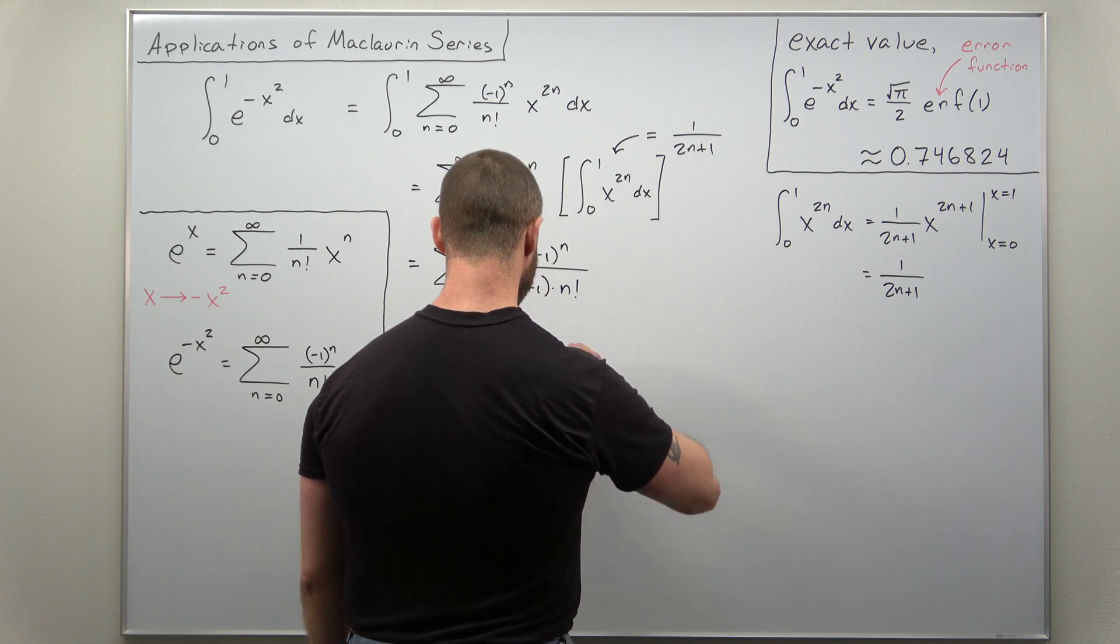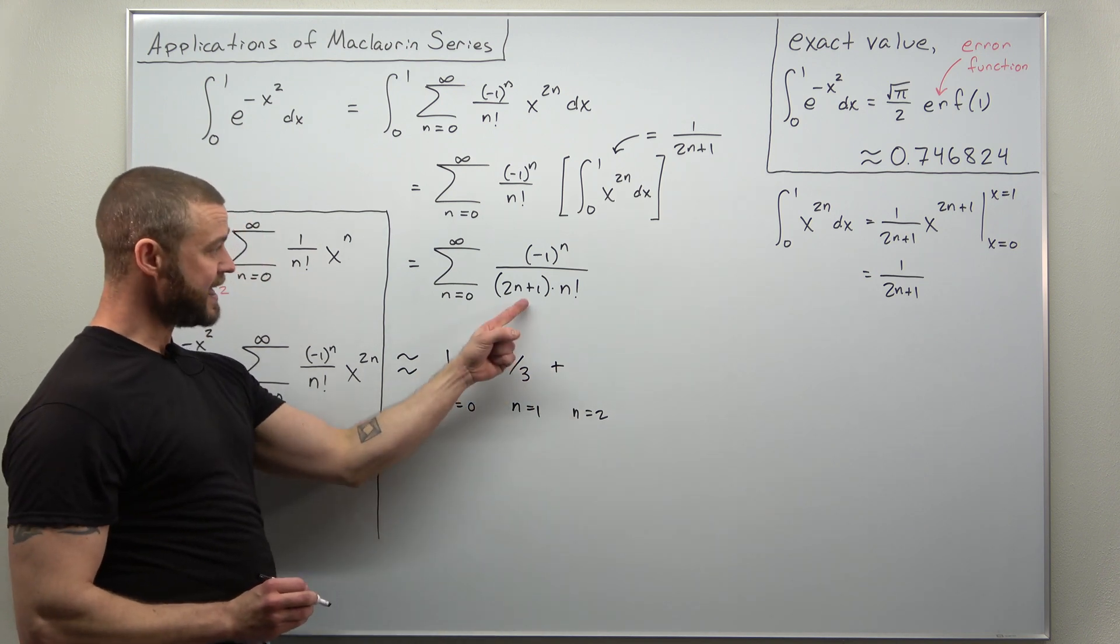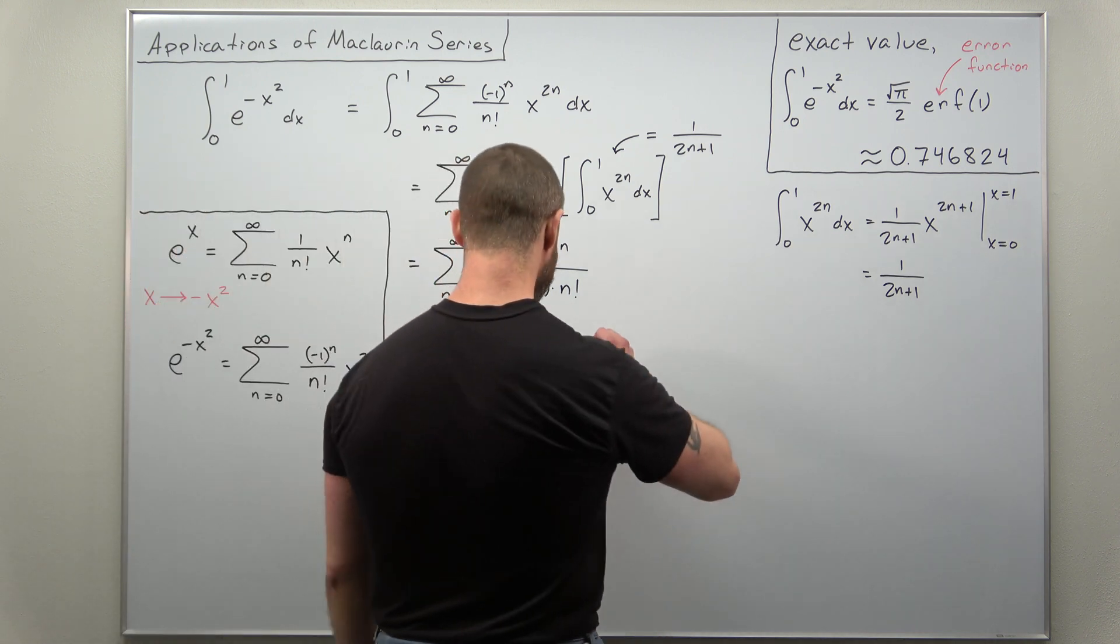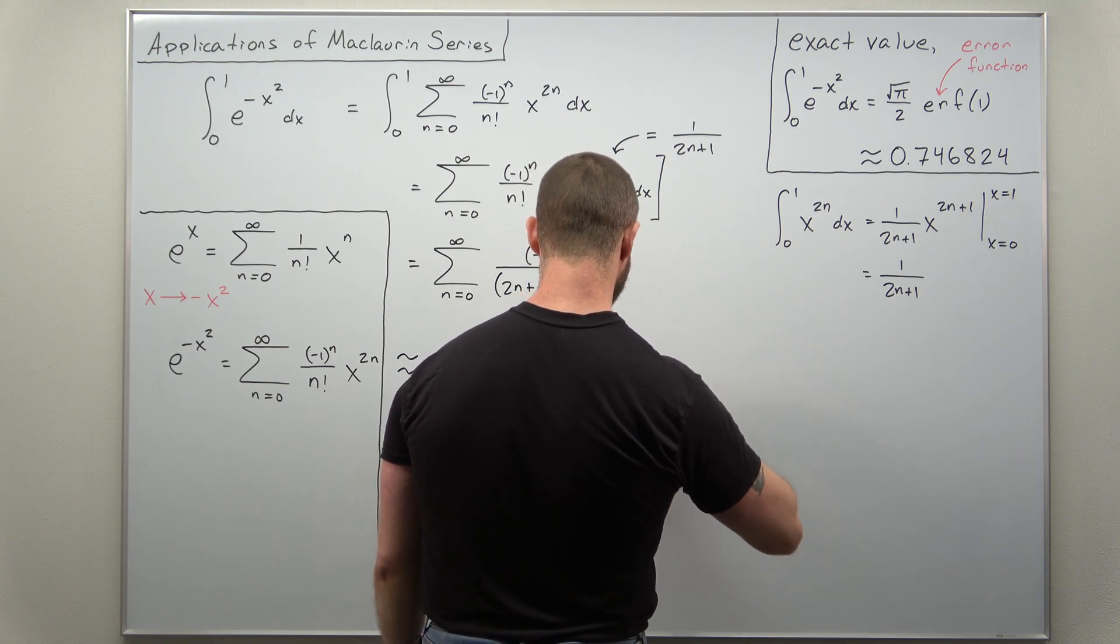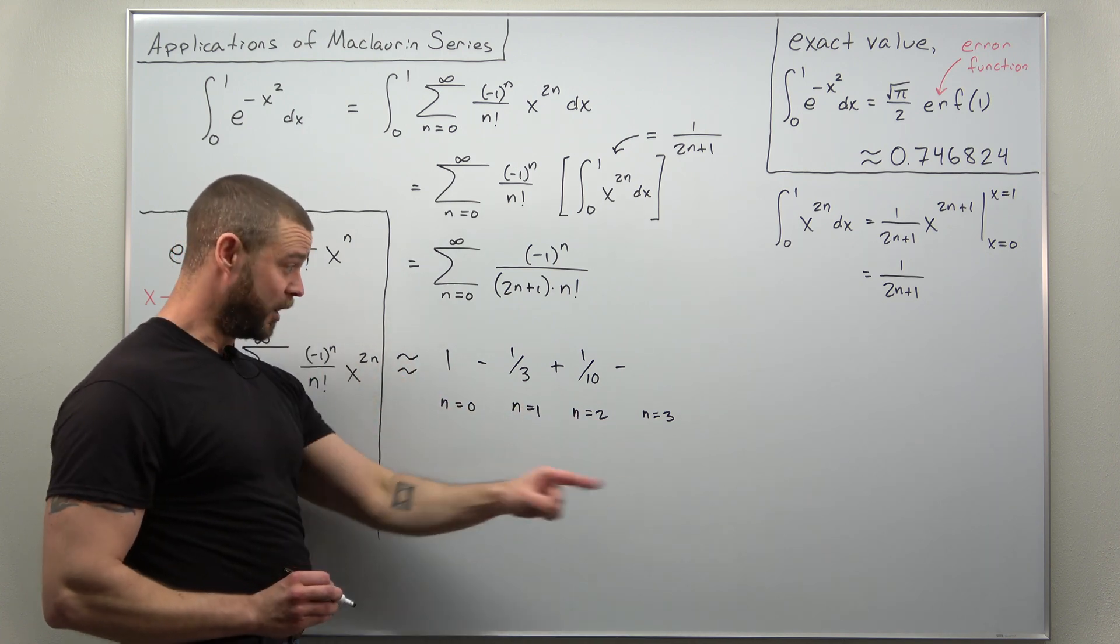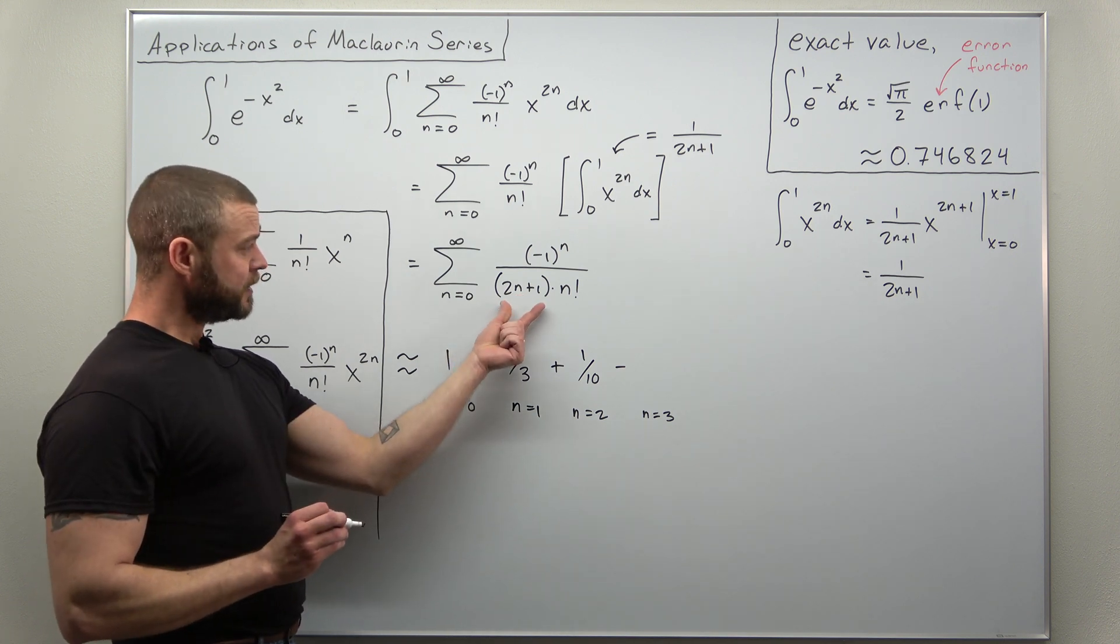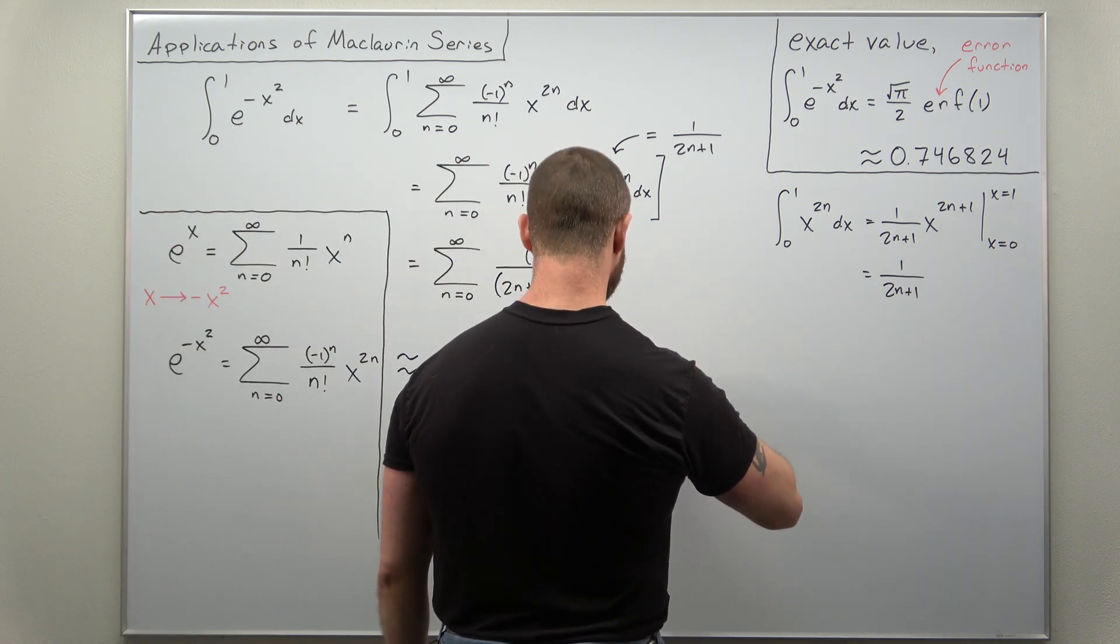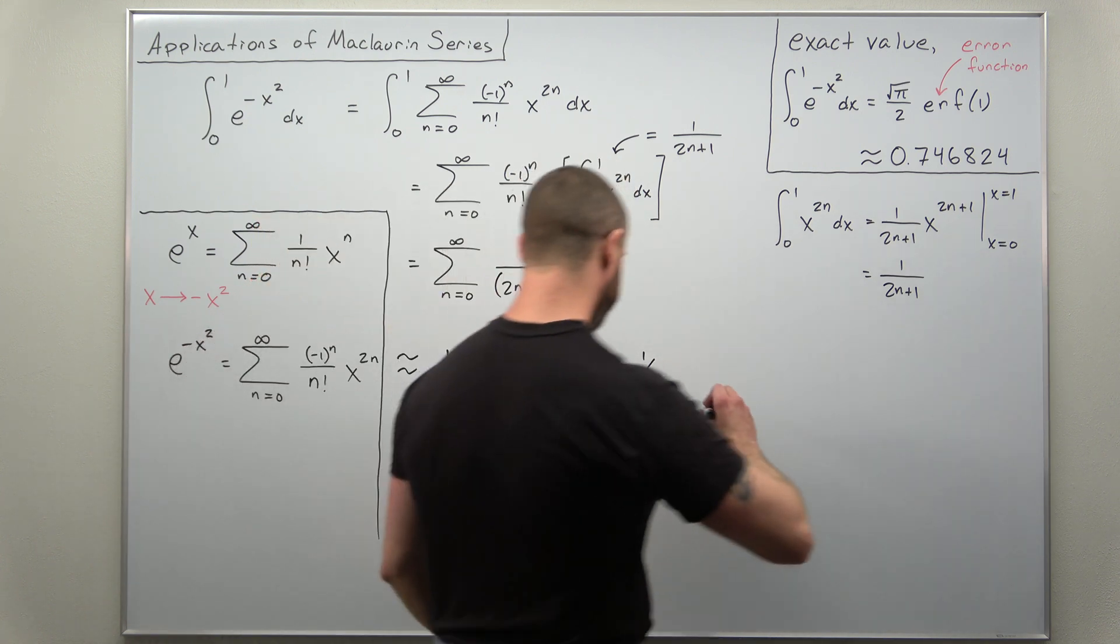Next we go to n equals 2. Negative 1 squared will be positive, so we get plus, and now when n is 2, looks like we get 5 times 2 factorial, we should get 1 over 10. Let's go to now n equals 3. The alternating factor negative 1 to the n, that'll evaluate to negative 1 when n is 3. And just be careful now, we're going to have with n as 3, this factor down there becomes 7 times 3 factorial, which is 6, we should get minus 1 over 42.